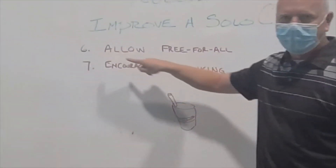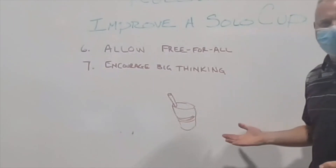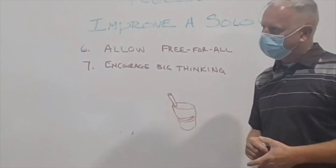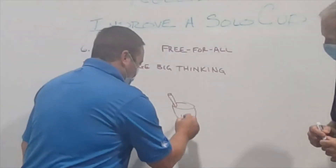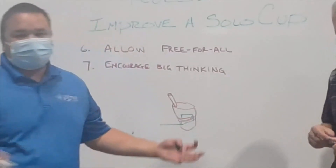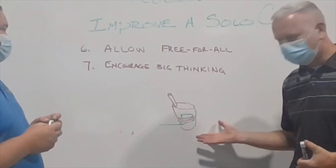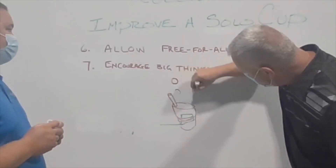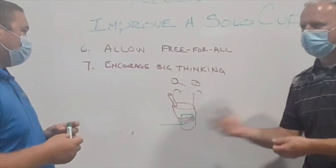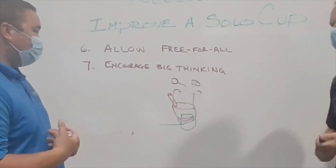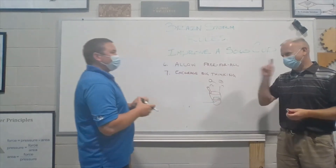The last two rules — number six, allow a free for all, and number seven, encourage big thinking — really go together. 'I think we should make this cup have its own portable screen we can hook our Xbox into to watch YouTube.' 'How about the cup could actually fly to you — put a little four-rotor drone on it and remote control it with your Xbox to bring the cup to you on the sofa.' 'What if we connected Alexa to it so you could say, Hey Alexa, cup, add lemonade?'